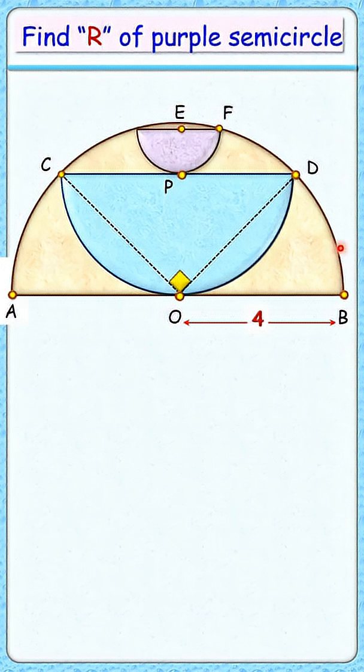Also, with respect to the brown semicircle, CD is a chord with P as the midpoint. By theorem, the line joining the center of the circle to the midpoint of chord is perpendicular to the chord.